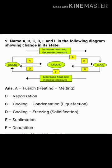The last question: name A, B, C, D, E, and F in the diagram showing changes in state. A is solid changing to liquid — this process is melting or fusion. B is liquid to gas — this is vaporization. C is gas to liquid — this is condensation. D is liquid to solid — this is freezing or solidification. E is solid directly changing to gas — this is sublimation. F is gas directly changing to solid — this is also sublimation, also known as deposition.